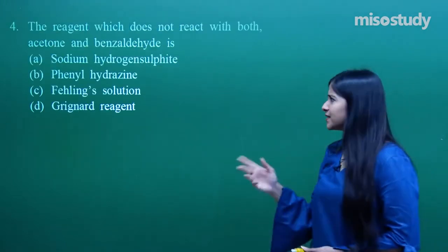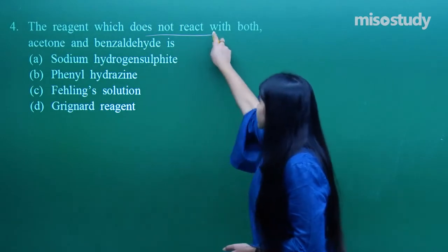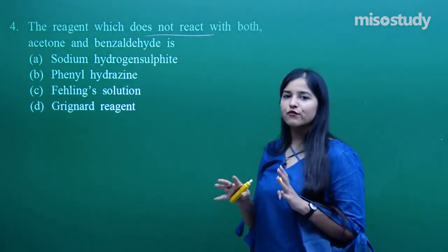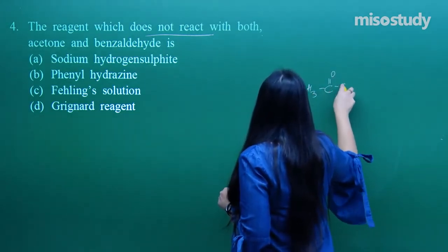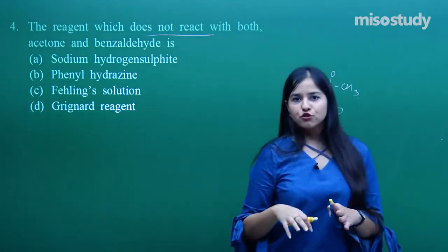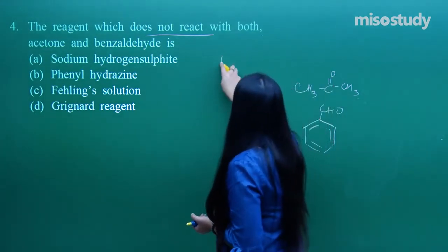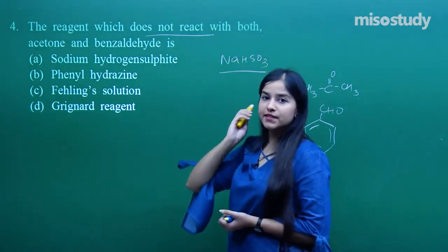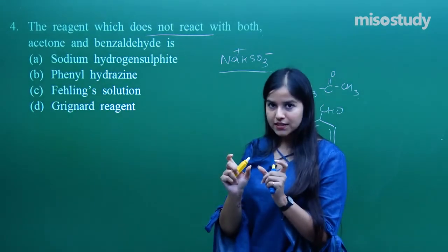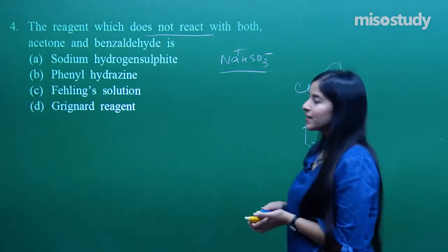The next question is about knowledge of reagents: which reagent does NOT react with both acetone and benzaldehyde? The names are just given to indicate one is a ketone and the other is an aldehyde. Sodium hydrogen sulfite (NaHSO₃) breaks into Na⁺ and HSO₃⁻ — it needs a polar molecule, and both compounds have polarity due to the carbonyl group, so it will react with both.